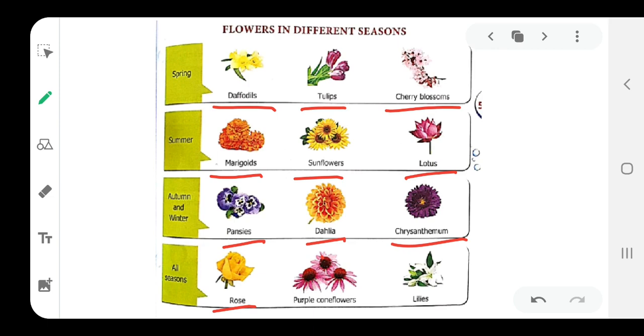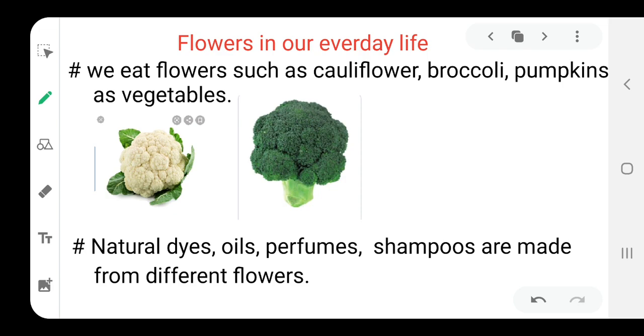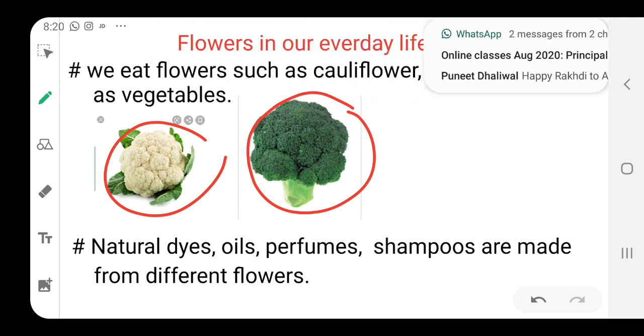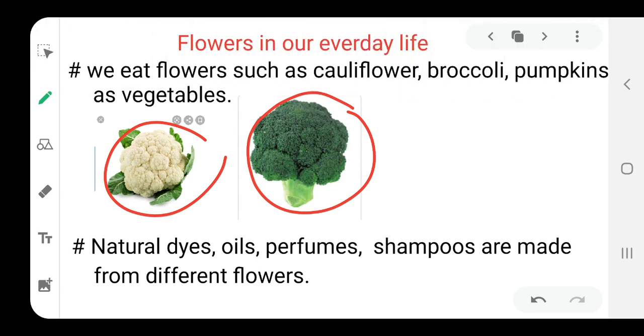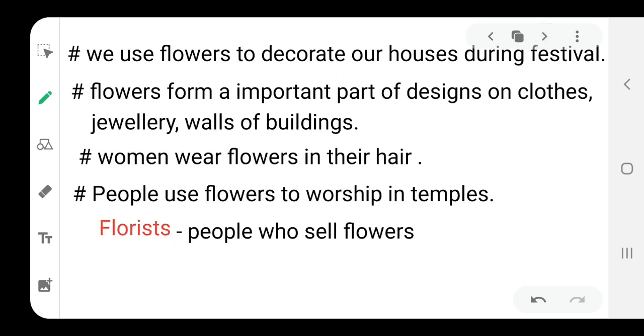Throughout the season you can get flowers like rose, jasmine, and lilies. Some of the flowers we eat as vegetables, as you can see broccoli and cauliflower and pumpkin flowers. There are many natural dyes, oils, perfumes, shampoos. We use the flowers to decorate our houses during festivals or any functions.